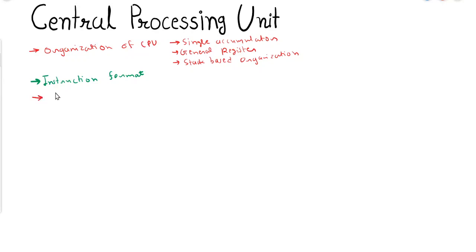After instruction format, we will start our discussion with addressing modes. Till now we have discussed only two types — direct and indirect. Here we will discuss many more types: immediate, implied, auto increment, auto decrement, relative address mode, register direct, and register indirect.